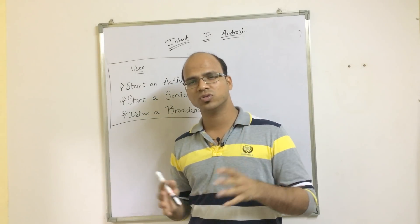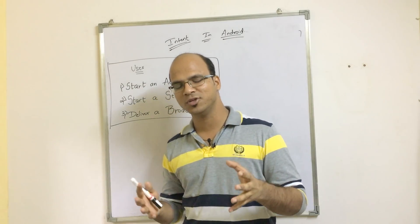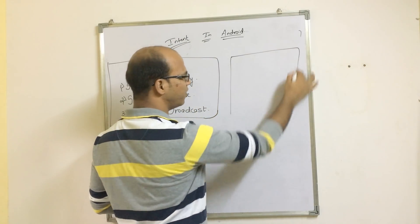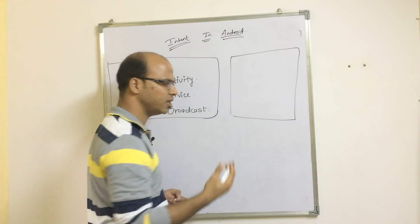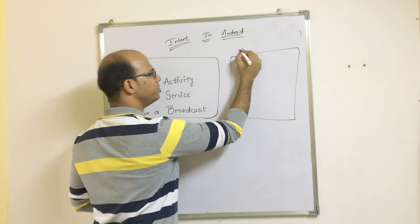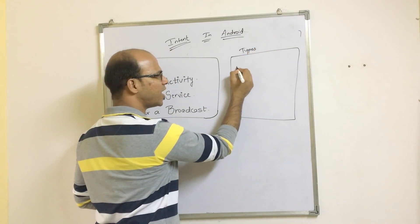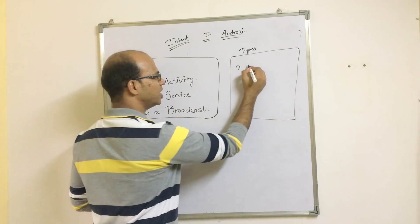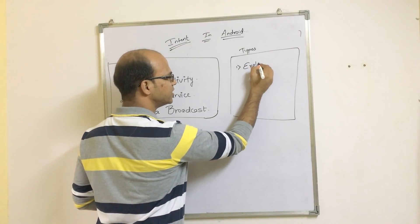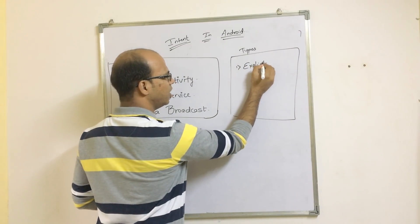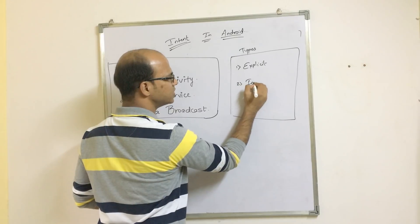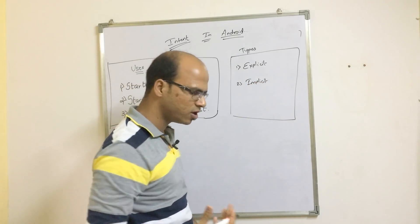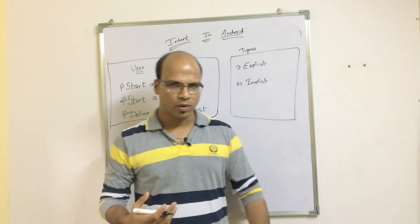We have different types of intents — basically two types. The first type is explicit intent and the second one is implicit intent. So we have two types of intents.